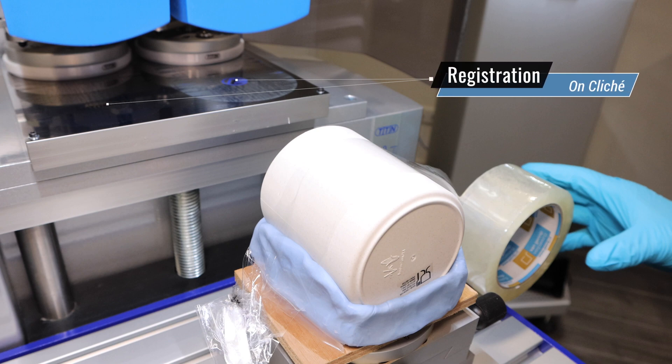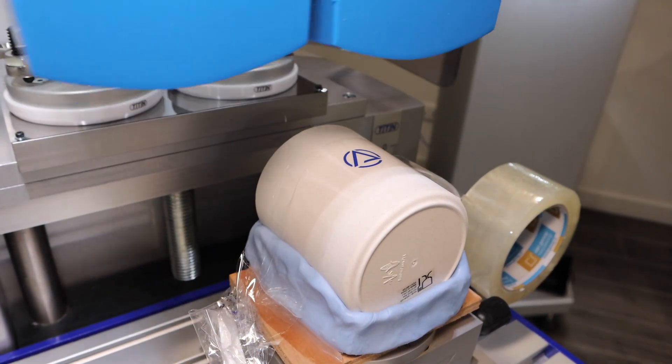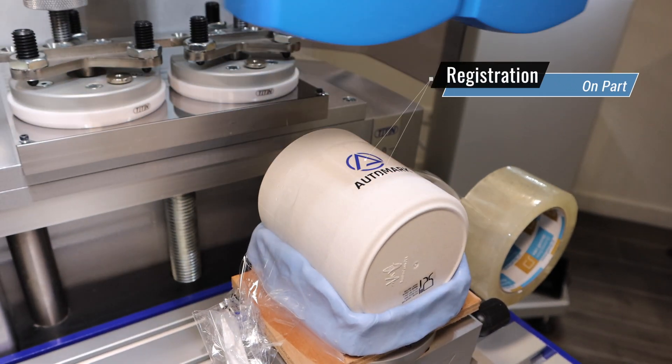Notice the printing plate already has the registration done on the plate. This allows quick setup and printing, saving about 20 to 30 minutes of setup time over competitors' machines. Look at how quickly we get a perfectly lined up image.